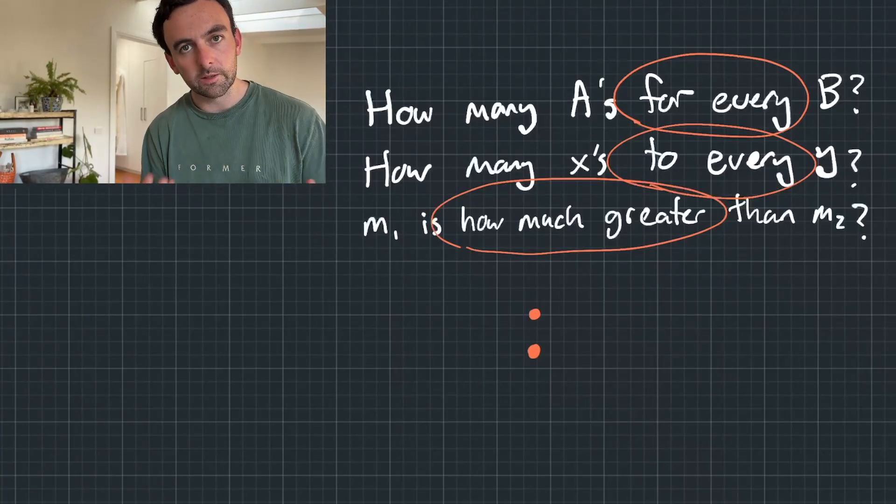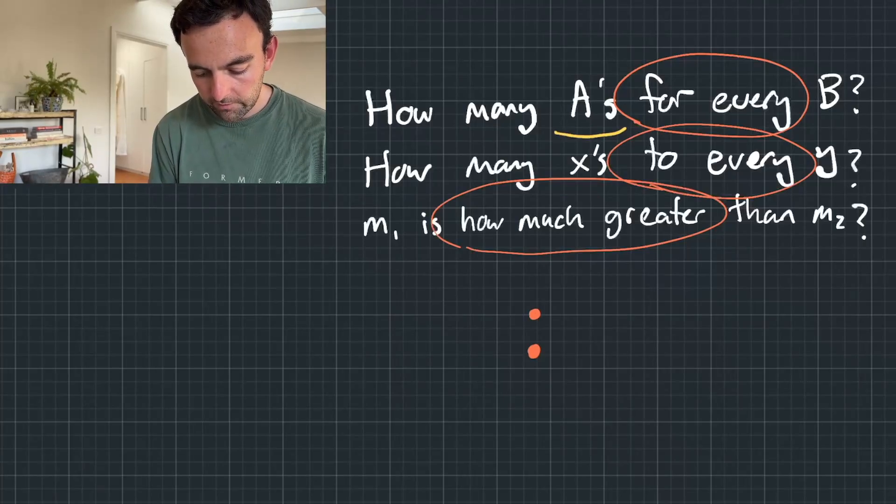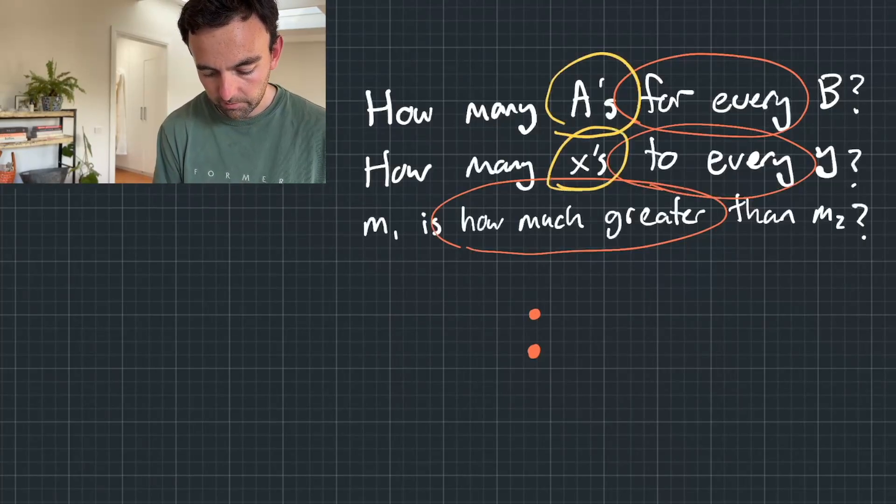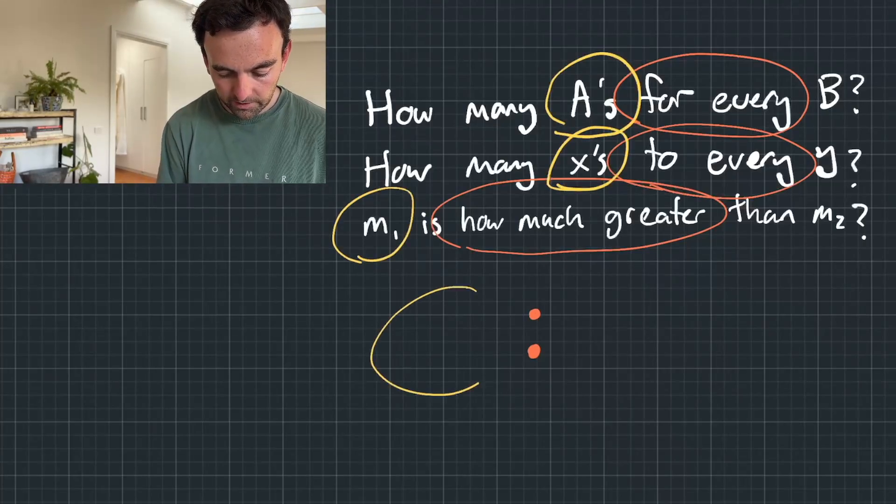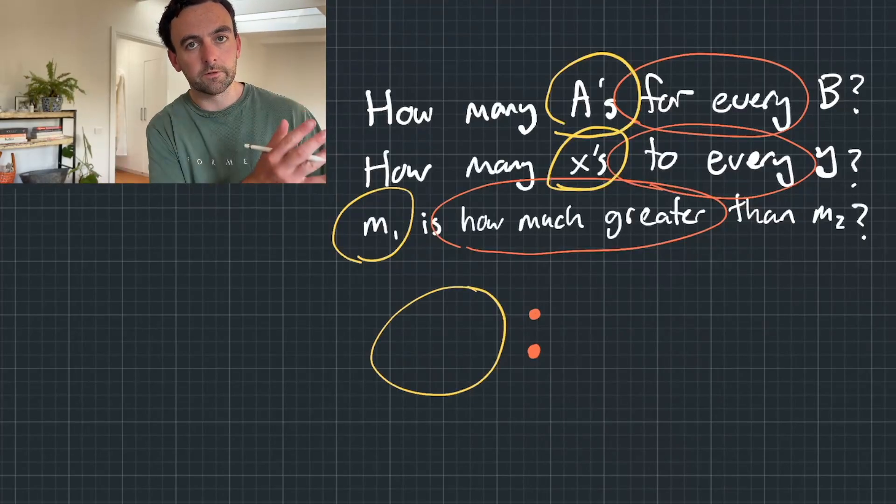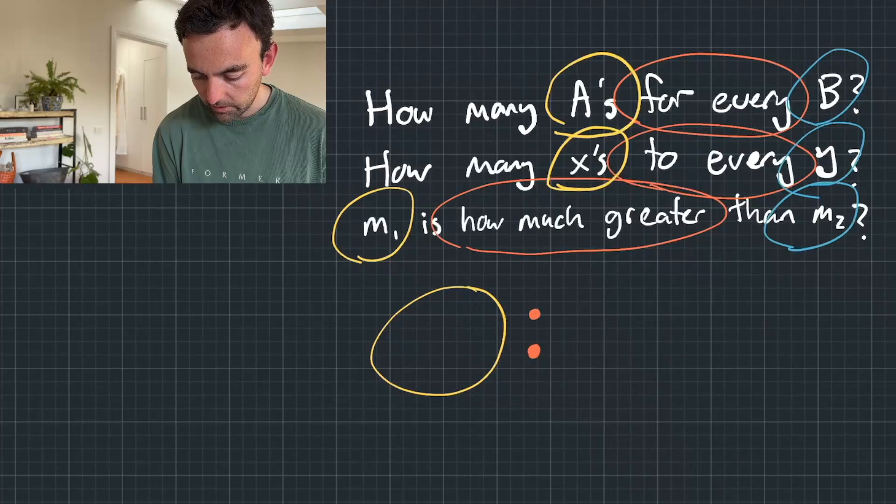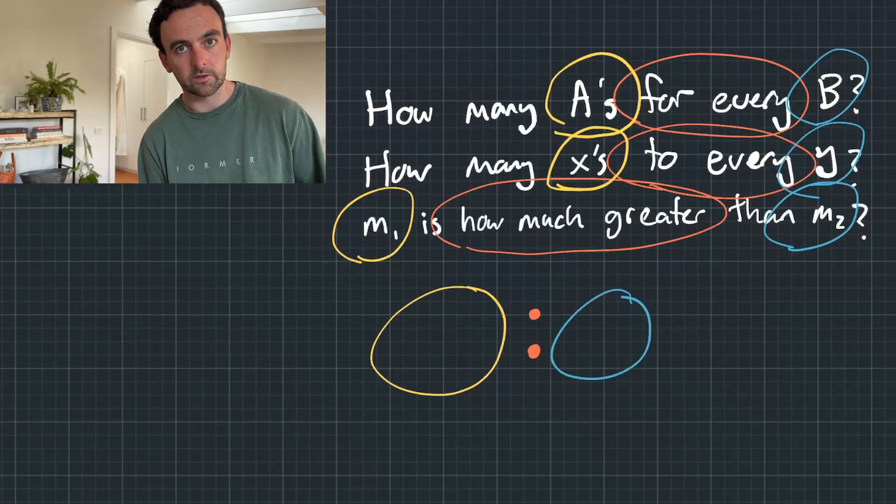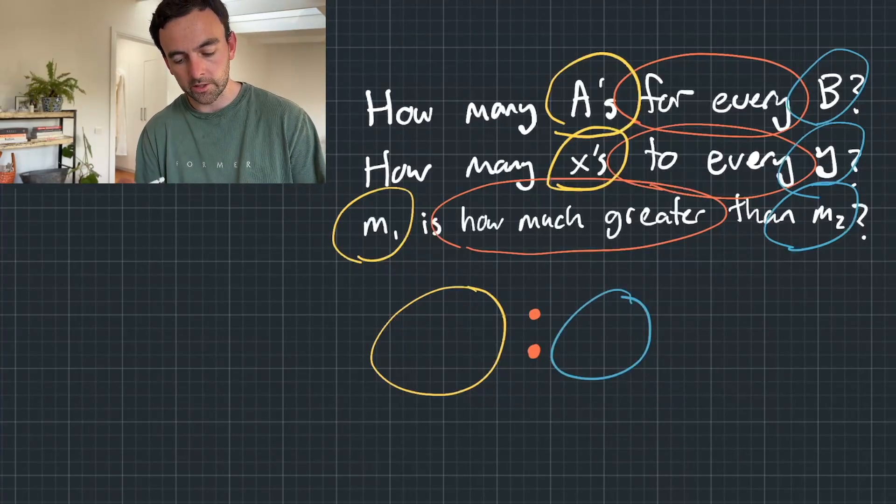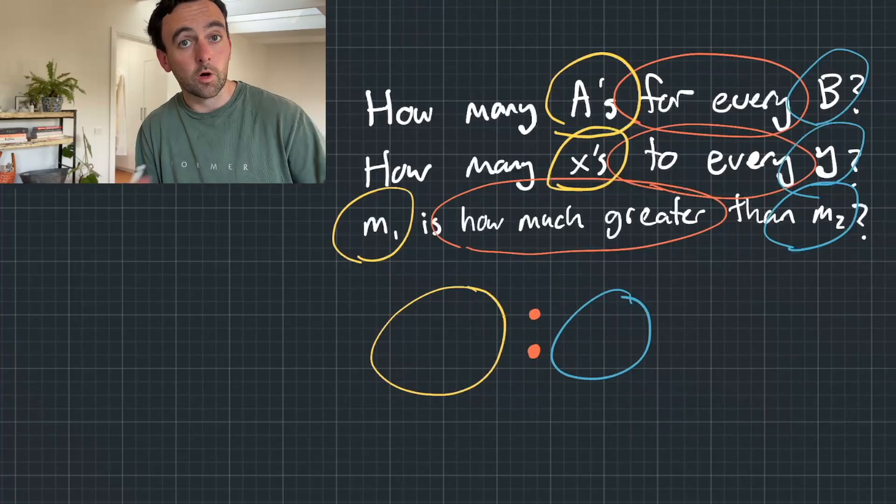They actually usually become quite easy because whatever's on the left of this orange statement actually is the number that ends up on the left of the colon. And whatever's on the right hand side becomes what's on the right hand side of the colon. So it's quite easy based on the question to set out what goes where.